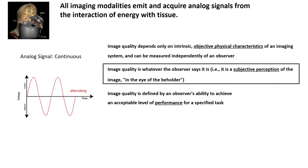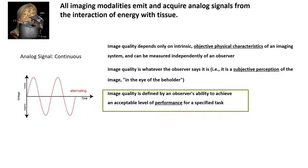Remember, every human's senses of perception vary. There are no identical human beings, therefore there are no identical interpretations of the information. Image quality is defined by an observer's ability to achieve an acceptable level of performance for a specified task.